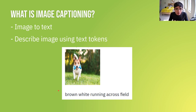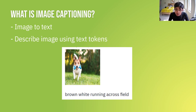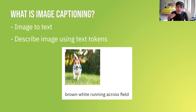I've actually worked on this myself before — I created a model and built a little system. This photo here shows a dog with a toy in its mouth running across a field. The caption generated by my model is 'brown white running across field.' Obviously that's not a great caption, but considering I did this within one weekend, I think it's pretty incredible. The algorithm is describing this image, and really it's not wrong — it's a brown and white dog running across a field.